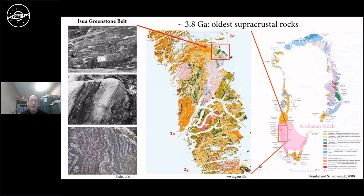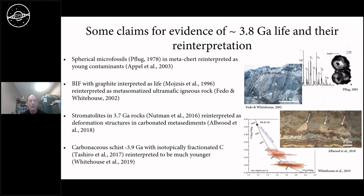These rocks have been extensively scrutinized mainly in the search for early life 3.8 billion years ago. There have been many reports and claims for life in these rocks, but also many claims that what people identify as life may not be life at all, or may not be as old as proposed. Many of these controversies exist because the rocks in Greenland and northern Canada are quite strongly deformed and heavily metamorphosed — heated to temperatures well above 500 degrees — and as a result have lost quite a lot of primary information.